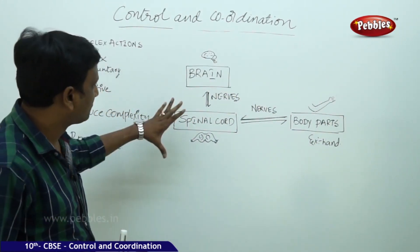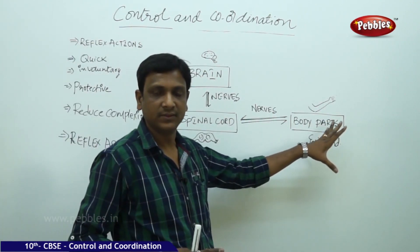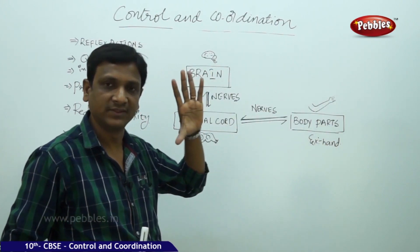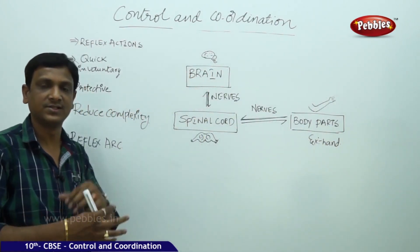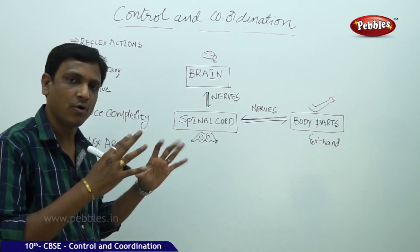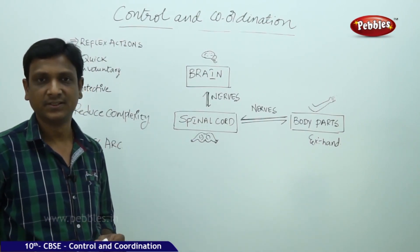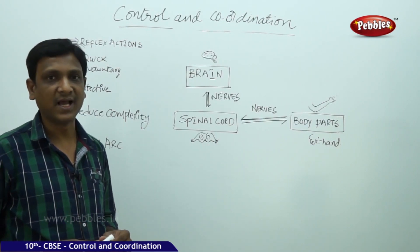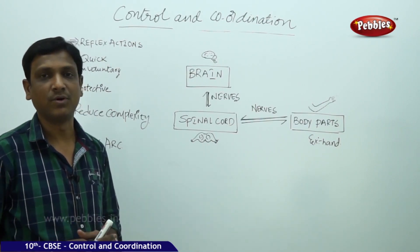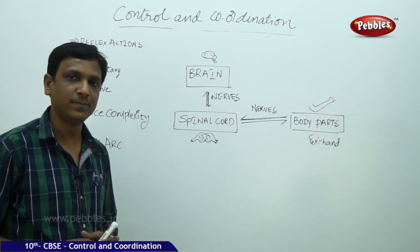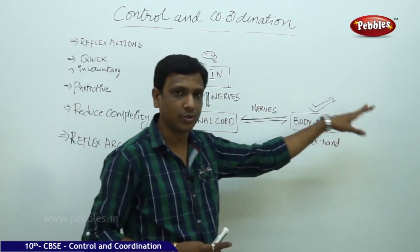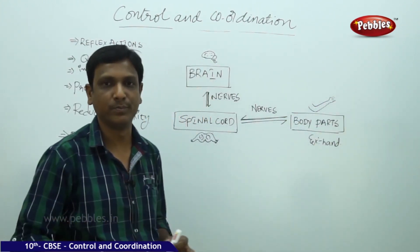Whenever there is some stimulus, the information is taken to the nervous system, analyzed, processed, and decisions are taken. But this seems to be a very complex, long, and lengthy process. Sometimes you will not have that much time to produce a response — you need to produce very quick responses. Suppose you kept your hand on a hot object, you touched a hot object.